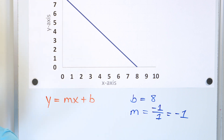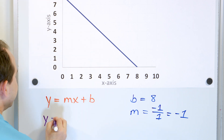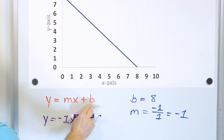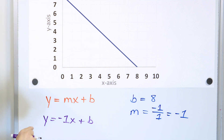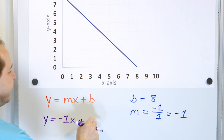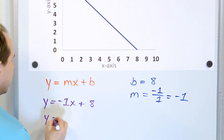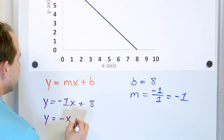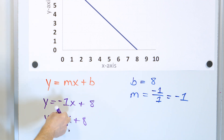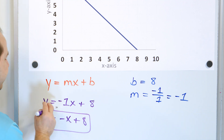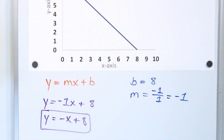So now that you have that information, you can construct the equation of a line. M we now know is negative one times x plus b, but b is eight. We can leave it like this, but usually we don't write a coefficient of negative one. Usually what we say is negative x plus eight, because you know there's always an invisible one there. So this is negative one times x plus eight. The answer to this is negative x plus eight.